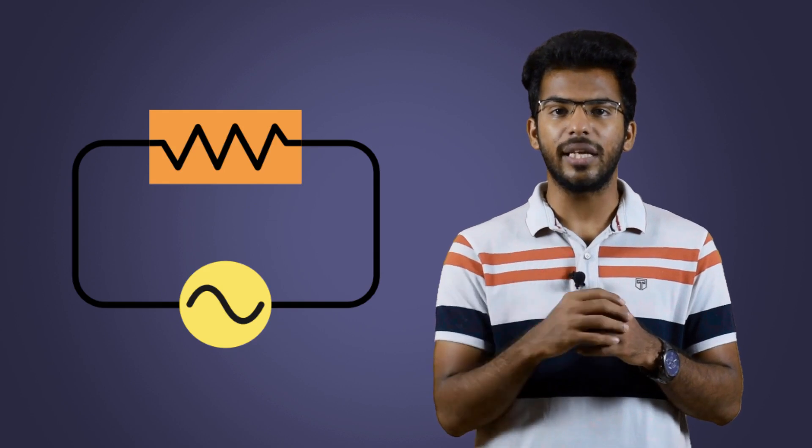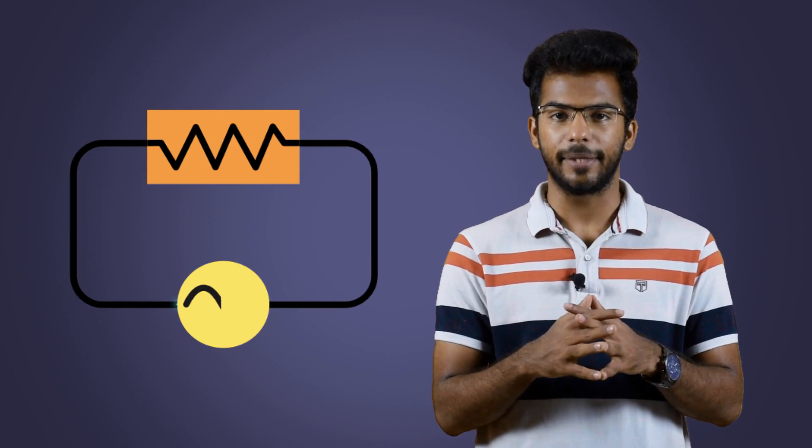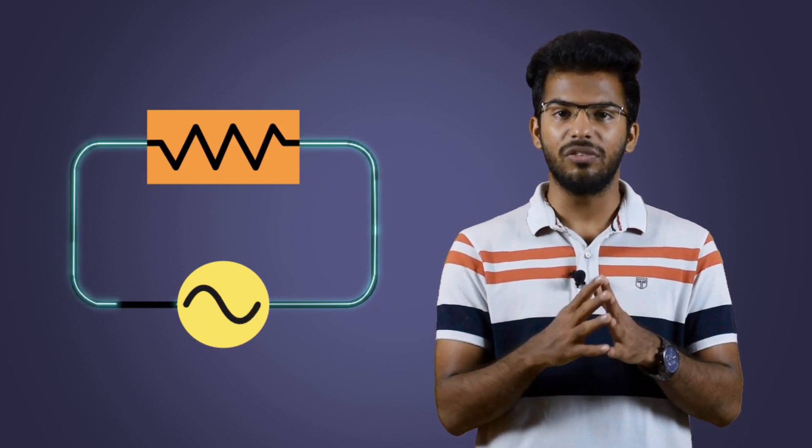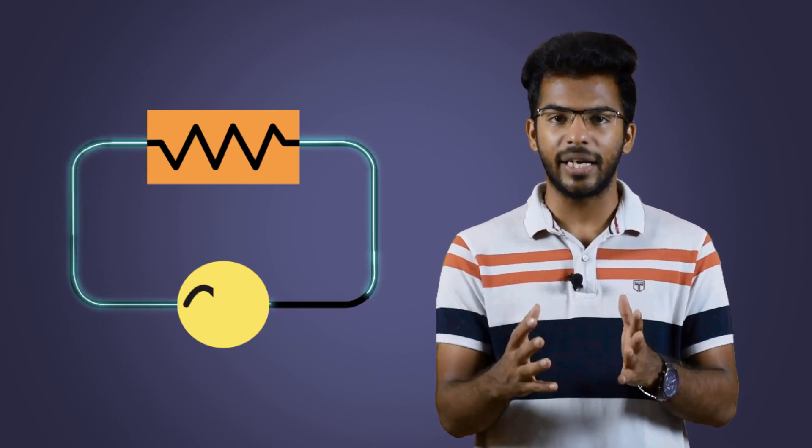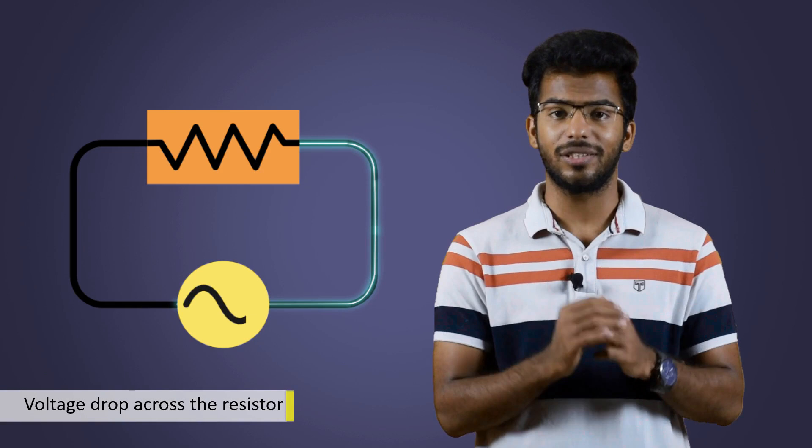Now, we'll see how the circuit behaves when we have an AC supply. As resistor just converts electrical energy to heat, the current will just pass through the resistor and there'll be a bit of voltage drop across the resistor.